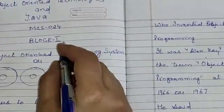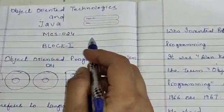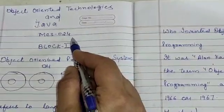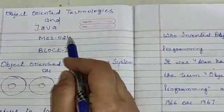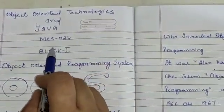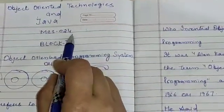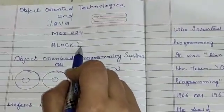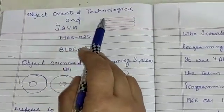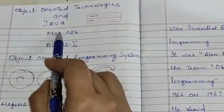Hello Learners, this video is for BCA IGNOU students whose course code is MCS024, Block 1: Object Oriented Technologies and Java.